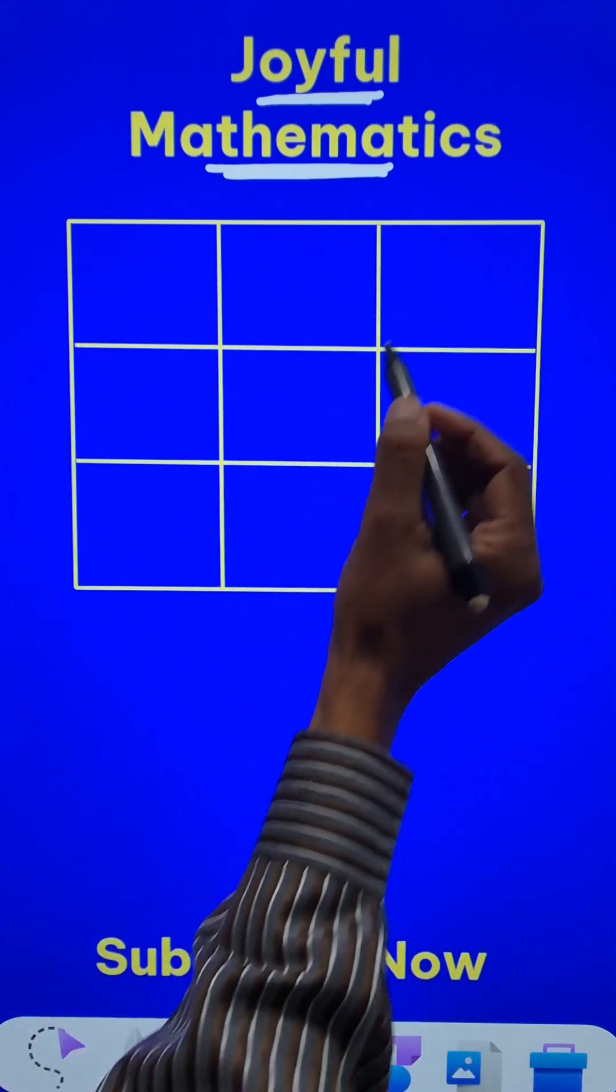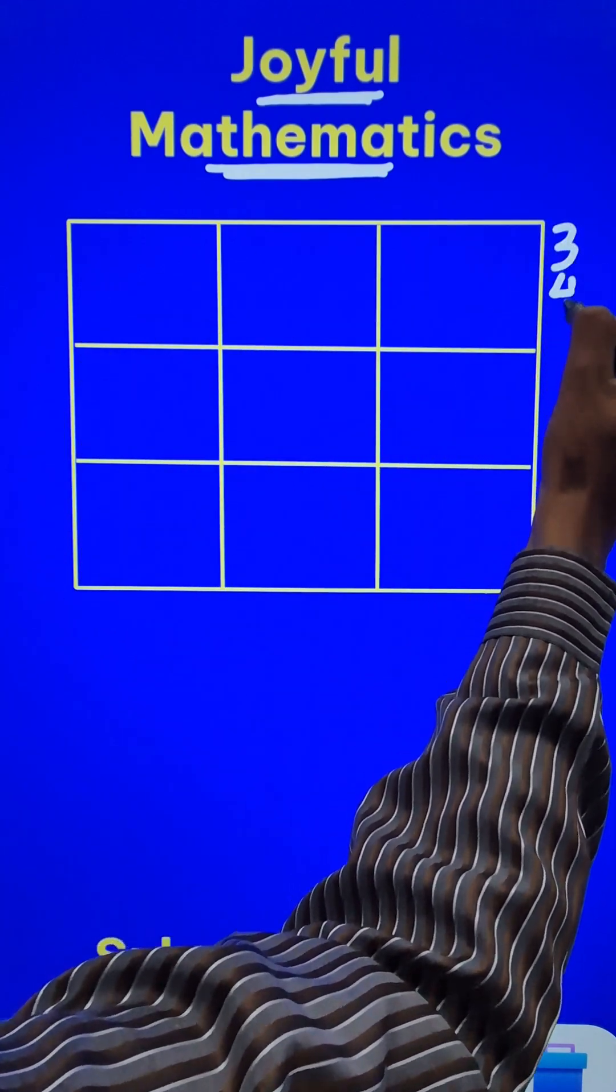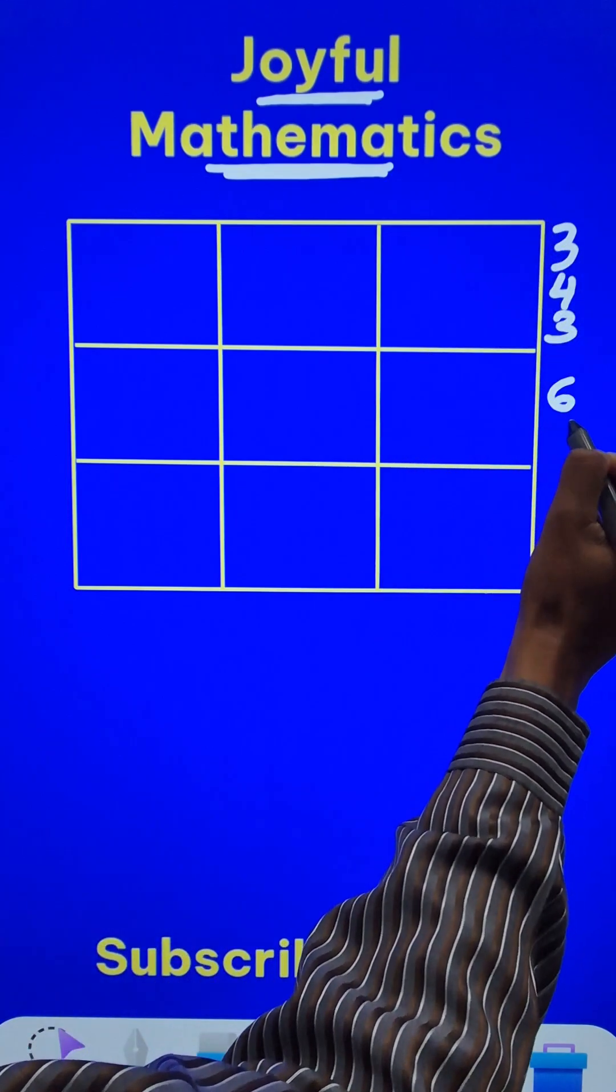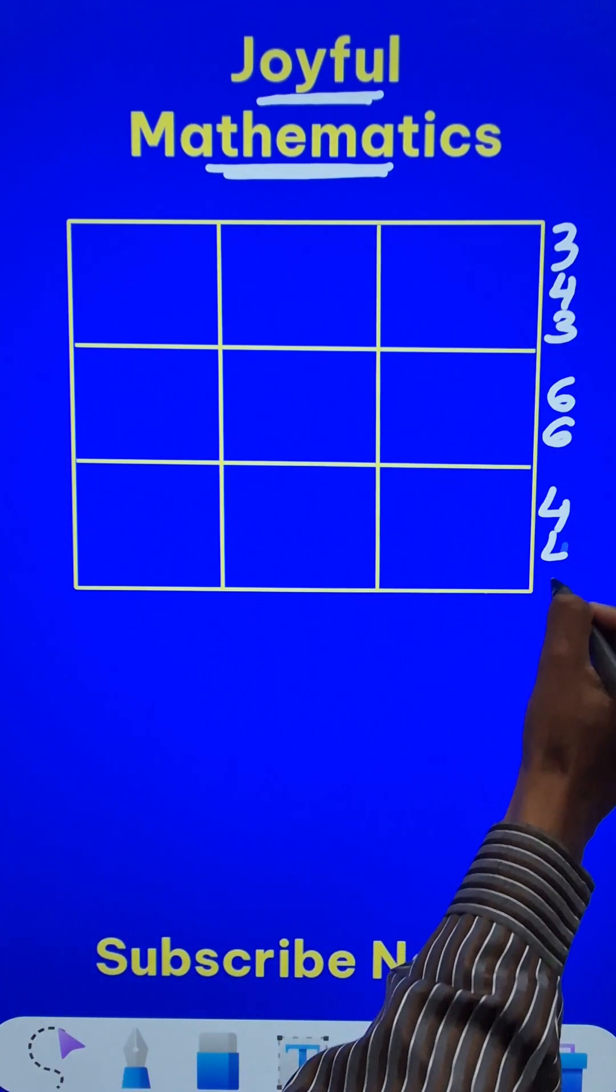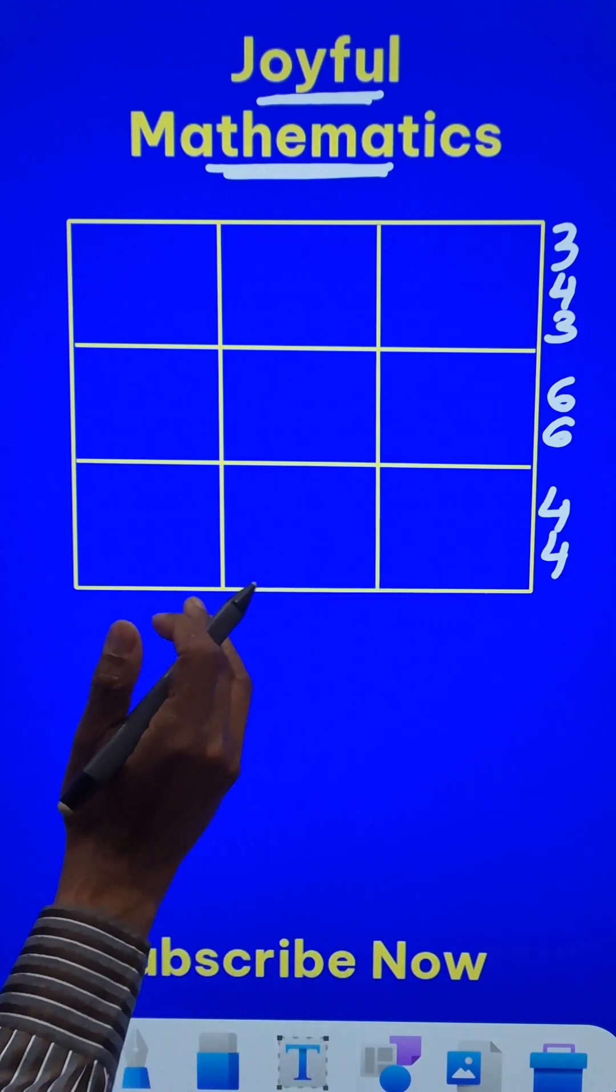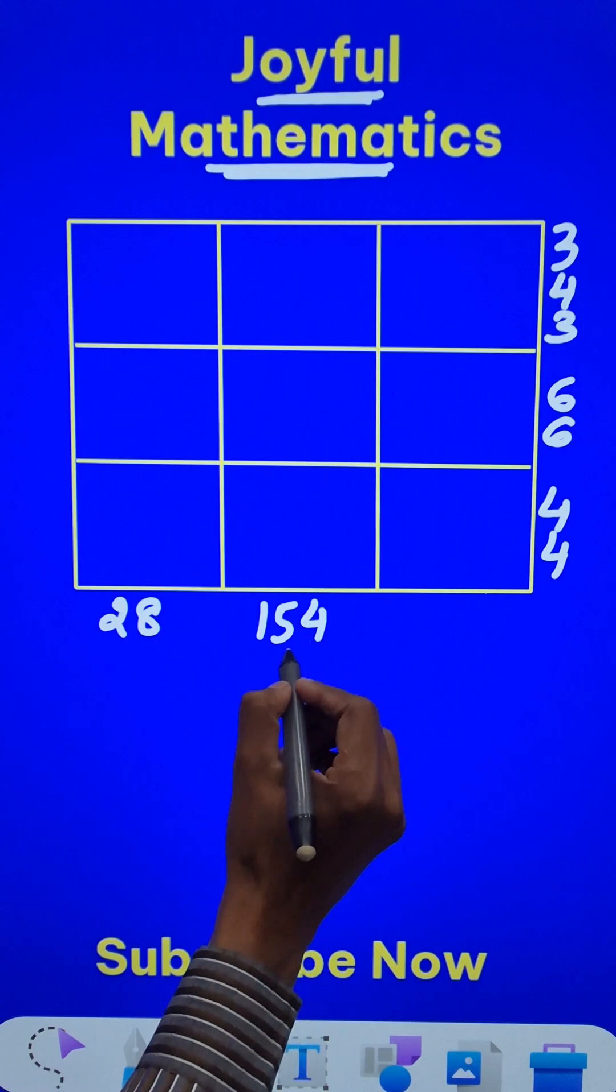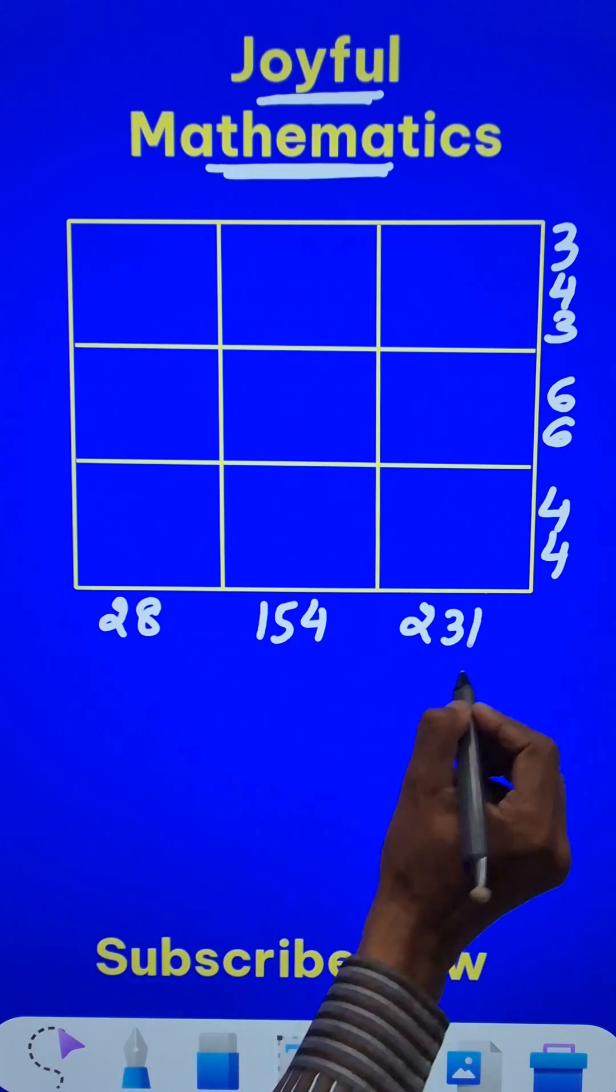So on the right hand side here, let's write 343 here. And then I will write 66 here and 44 here. On the bottom here, I will again write some numbers. Let's have a 28 here, 154 here and 231 here.